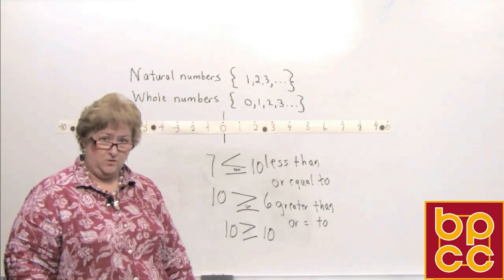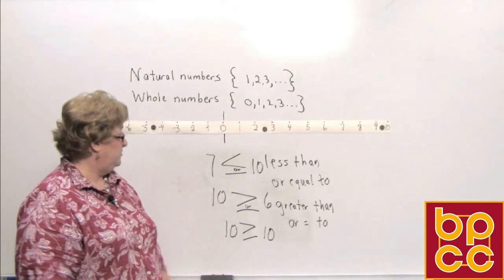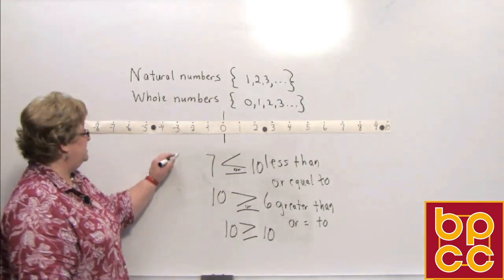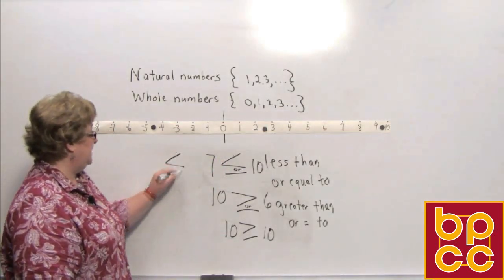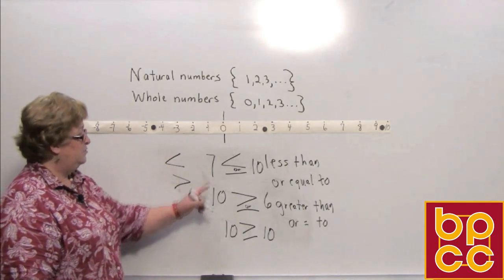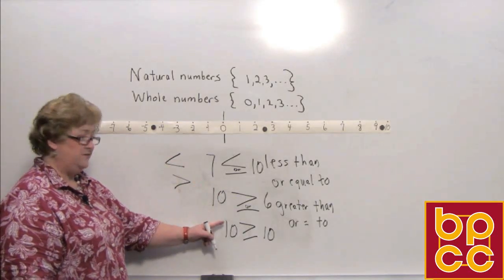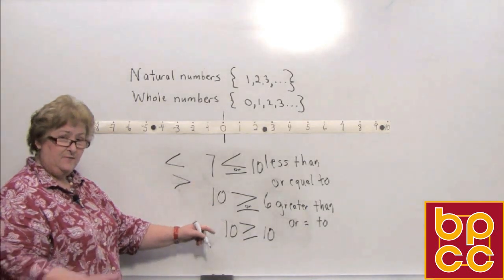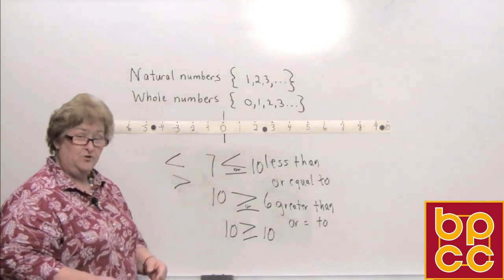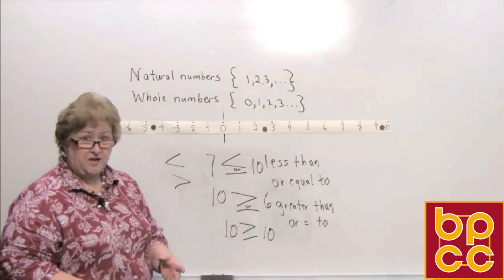So far we've used the equalities — the equal and not-equal signs — and the four important inequalities: greater than, less than, less than or equal to, and greater than or equal to. Now I'm going to give you some mathematical statements and you're going to decide if they are true or false.